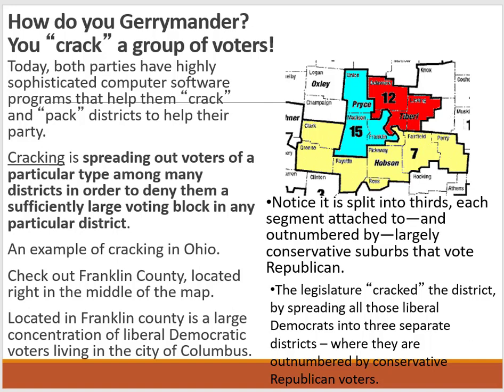A good example of cracking is in Ohio. Franklin County, located in the middle of the map, contains a large concentration of liberal Democratic voters living in the city of Columbus. The way it's drawn, it's split into thirds — each segment is outnumbered by the largely conservative suburbs that vote Republican. By cracking the district, those liberal Democrats are spread into three separate districts where they're always going to be outnumbered by conservative Republican voters.